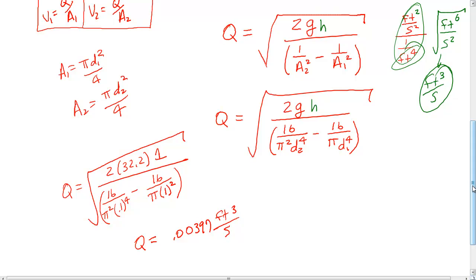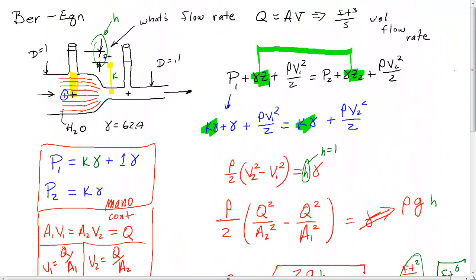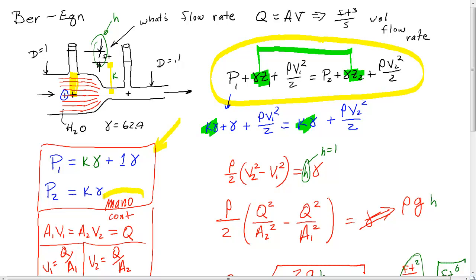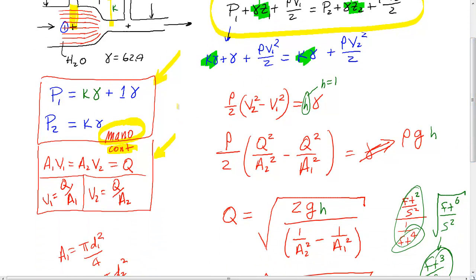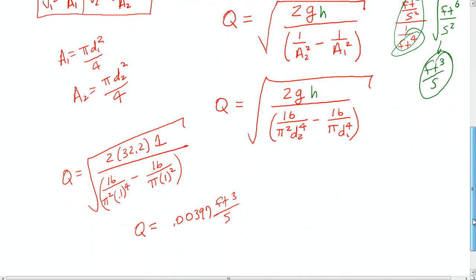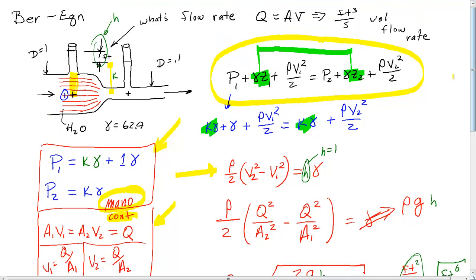The key steps were: first, write Bernoulli's equation; second, use the manometer equation for pressures; third, since there's a change in area, use the continuity equation. Combining all three and solving completes the solution. You need to be able to work these types of problems.